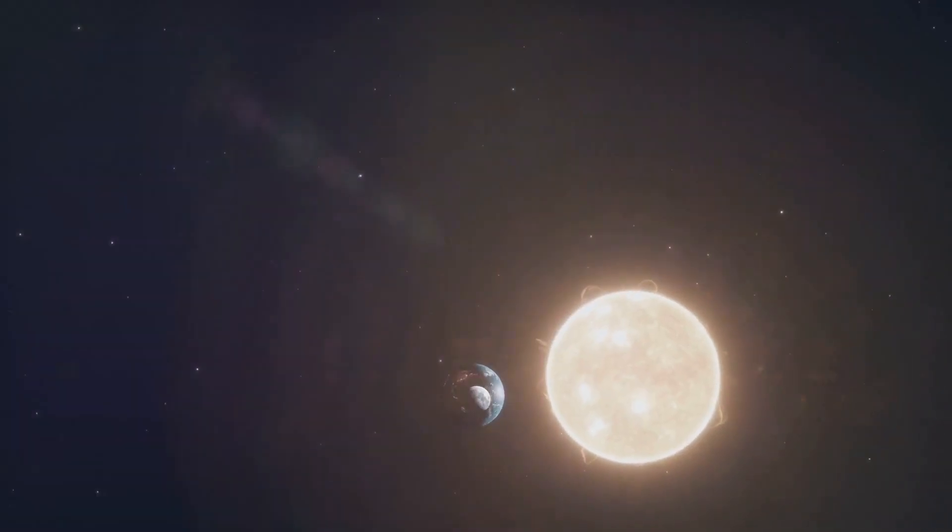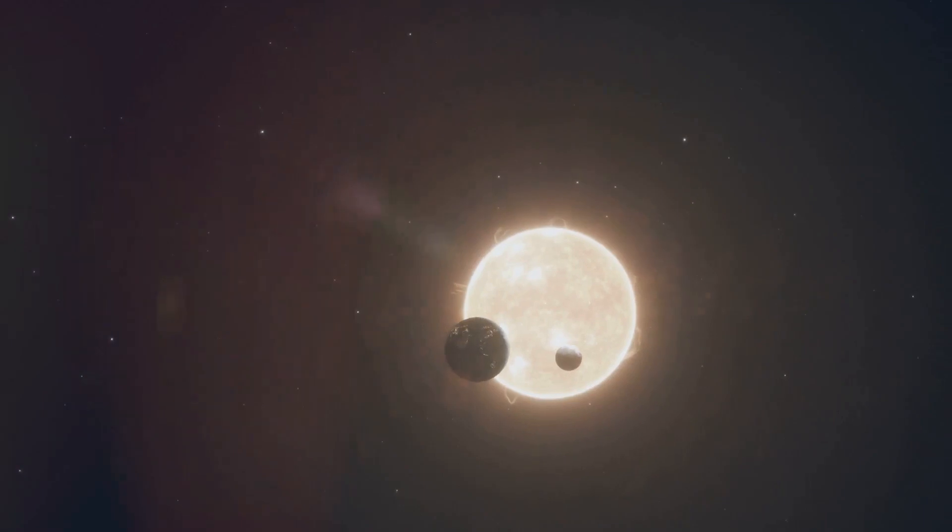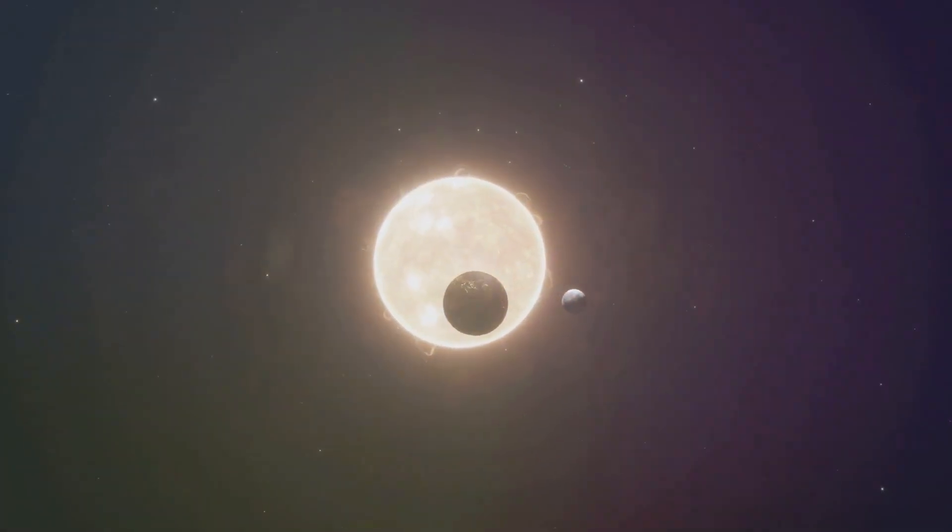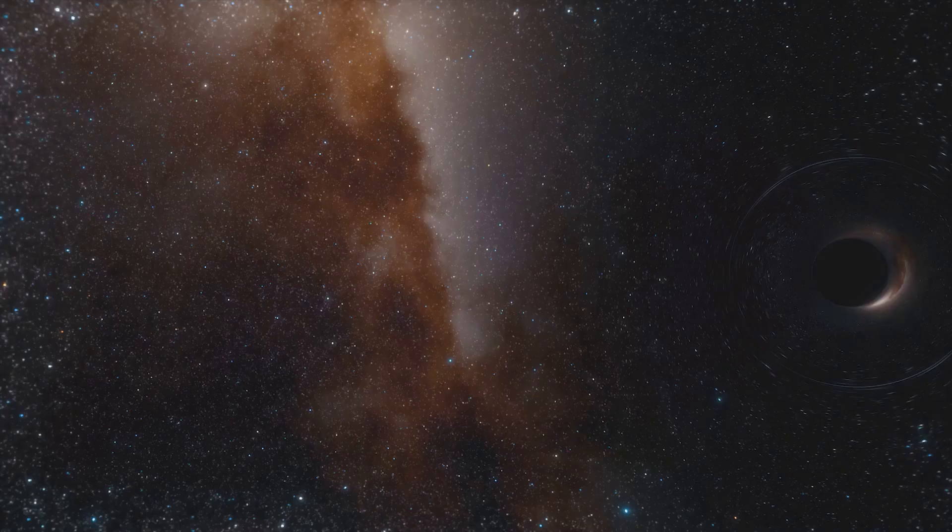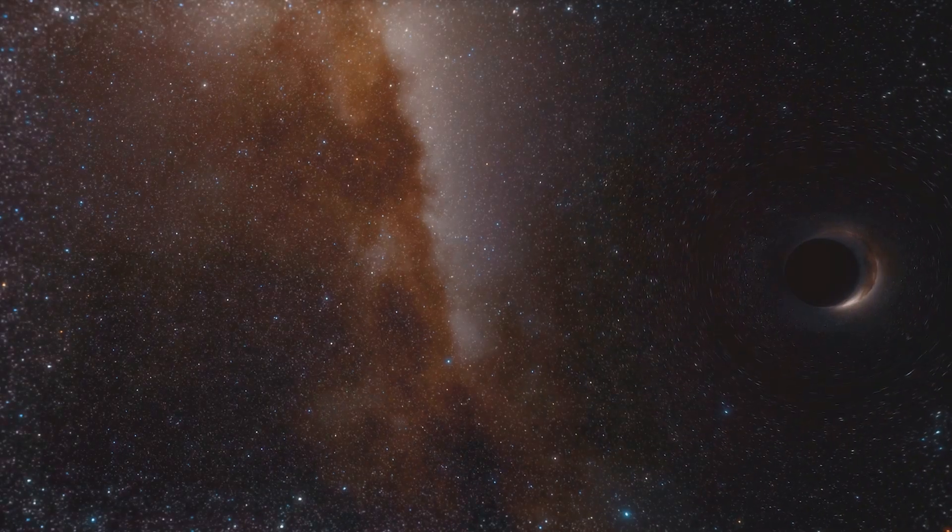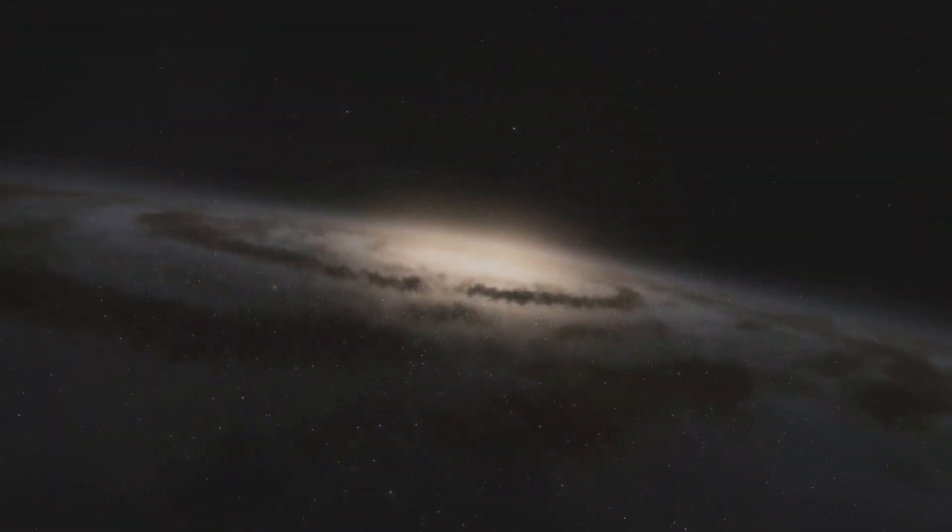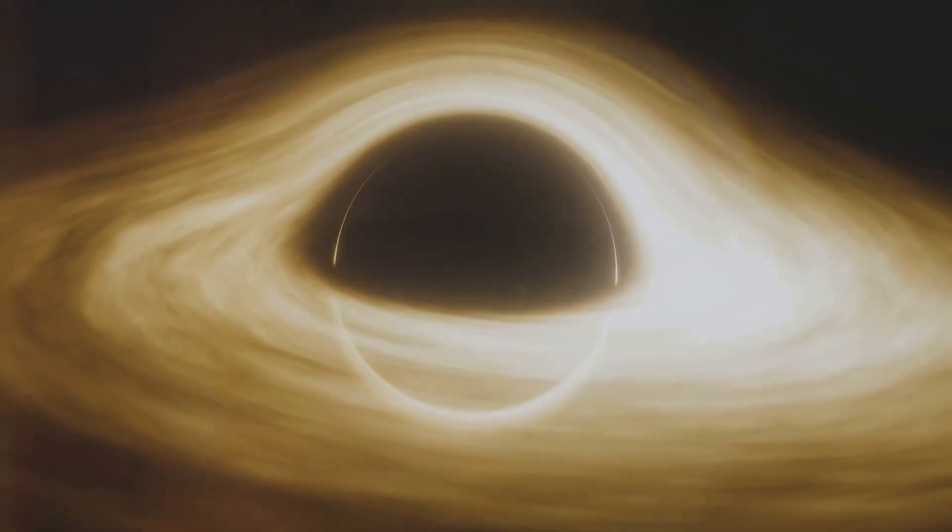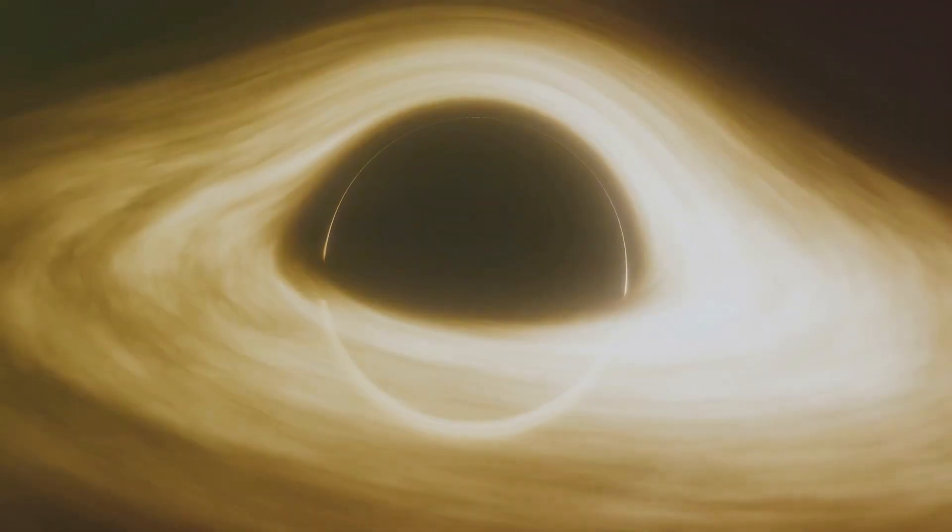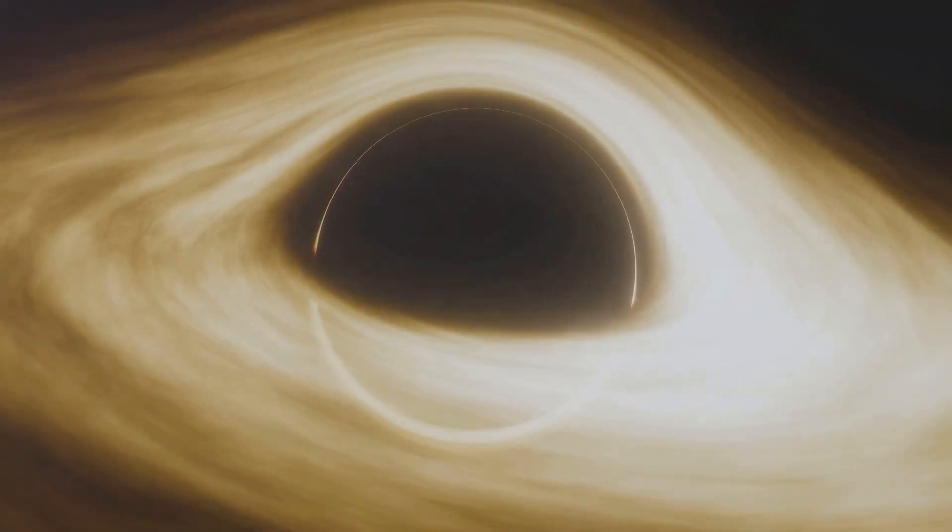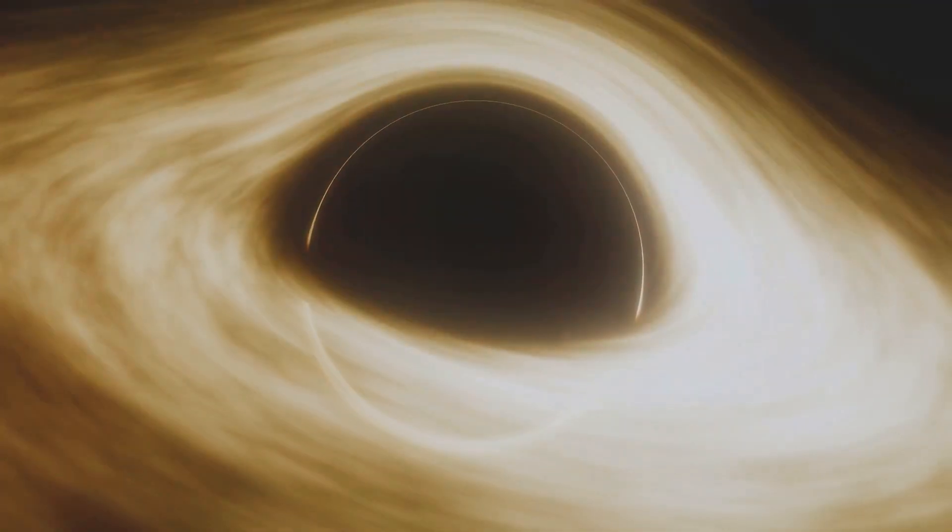For example, if our sun were suddenly replaced by a black hole of equal mass, the Earth's orbit would remain unchanged. The fear that black holes roam the galaxy sucking up stars and planets is unfounded. Their gravitational influence is potent but not boundlessly so. This chapter aims to demystify the nature of gravitational pull and clarify that black holes are not cosmic vacuum cleaners.